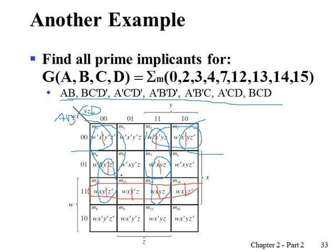The essential prime implicant here is the red one only, because it has at least one minterm that is not shared by any other prime implicant. All other prime implicants in blue have all their cells shared with other prime implicants, so they are not essential prime implicants.